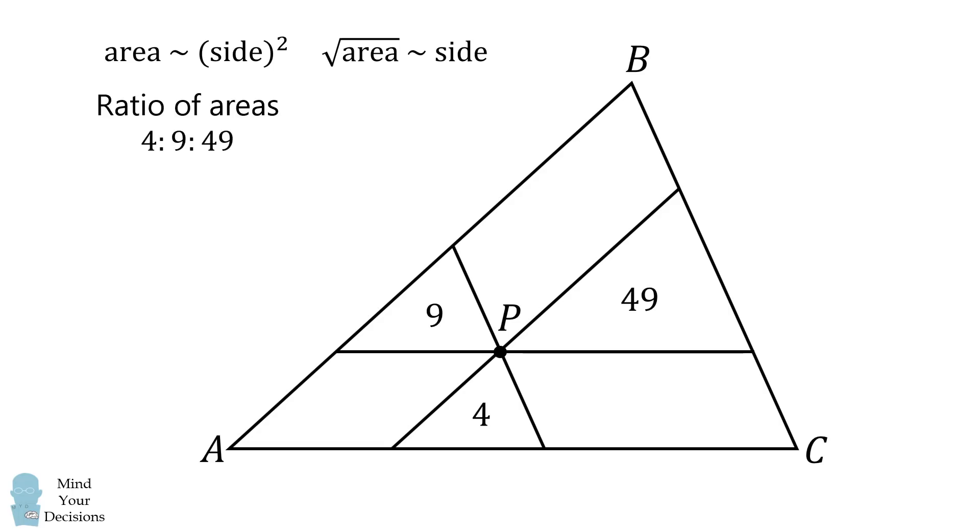The ratio of the areas of these three triangles is 4 to 9 to 49. Because these triangles are similar to each other, the ratio of their sides will be the square root of the areas. This works out to be 2 to 3 to 7.